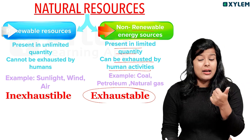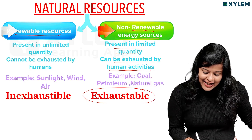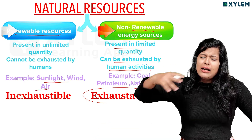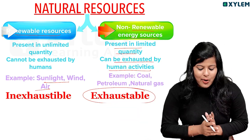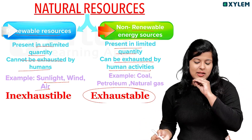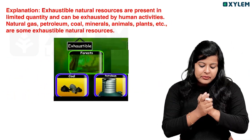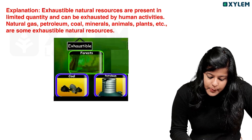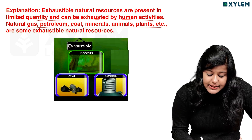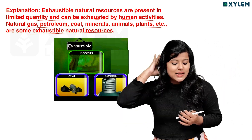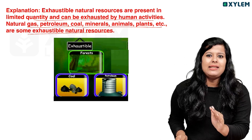Renewable resources include sunlight, water, and air — unlimited in quantity and cannot be exhausted by human activity. Exhaustible natural resources are present in limited quantity and can be exhausted by human activity. Examples include natural gas, petroleum, coal, minerals, animals, and plants.